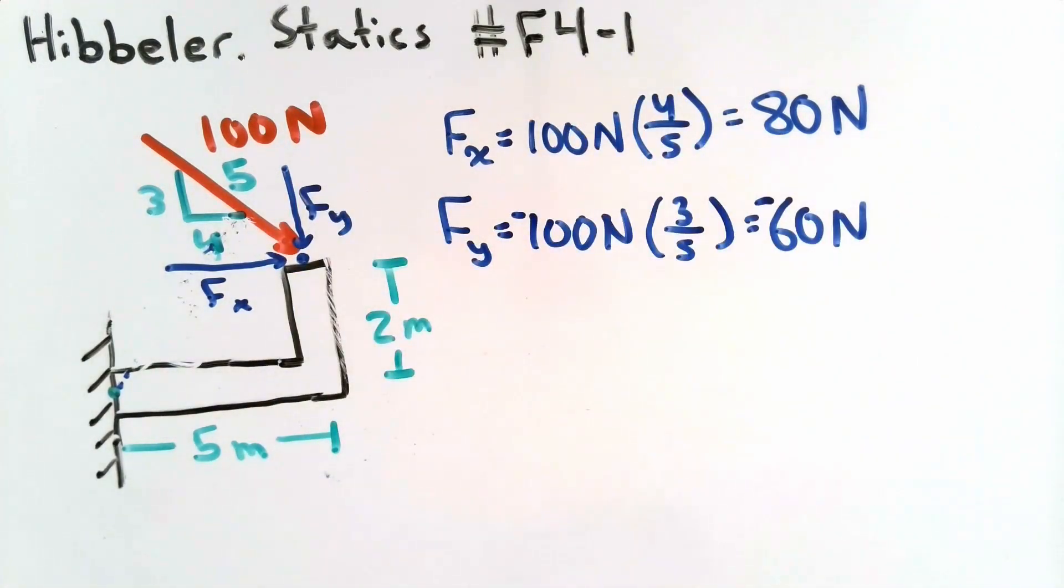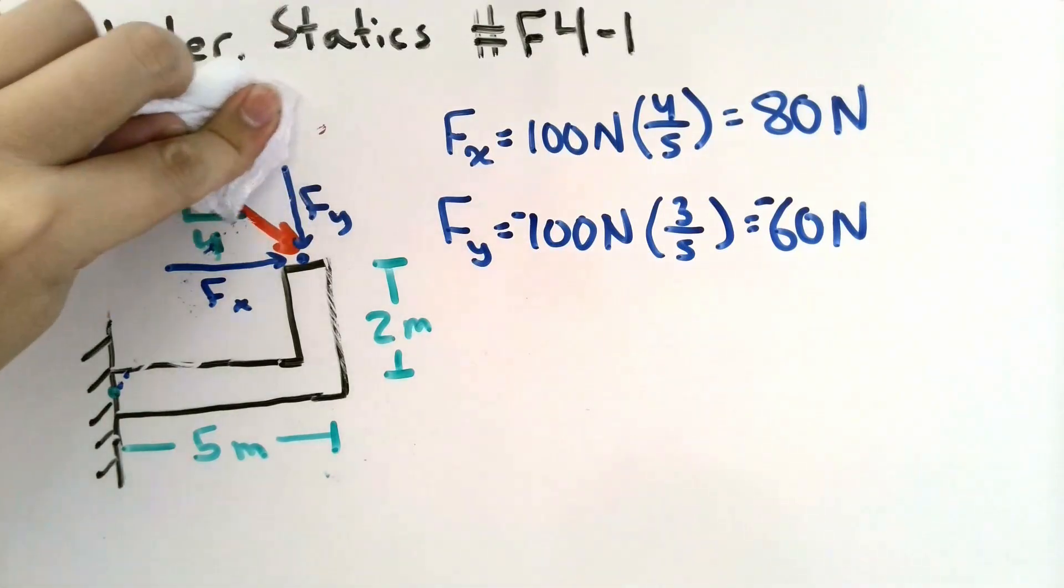When we start calculating moments, the signs of the force won't really affect us that much. So we have an X component of the force and a Y component of the force. In order to find the moment that these two forces cause on this point, we need to find the distance from the point perpendicular to the line of action of the force.